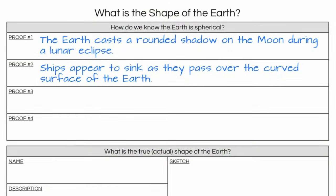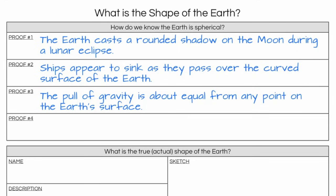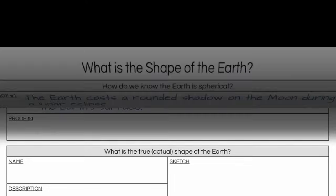Let's go to our handout. This will be proof number three. The pull of gravity is just about equal from any point on the Earth's surface, proving that the Earth is spherical. One more to go. Proof number four. And this one is really easy. Unfortunately, it's restricted to modern times.